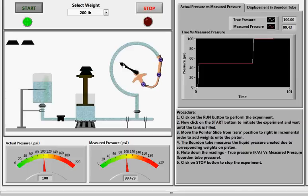Now the actual pressure and the measured pressure is being indicated through the meter indicator as well as through numeric indicators. Similarly, you can do it for 300-400 lb weights. Note down the readings of the pressure at different weights.